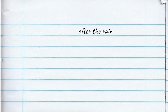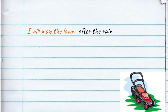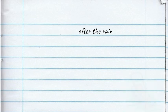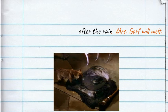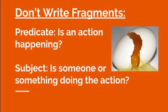'After the Rain.' Can you find something happening? Can you find a person or thing that isn't part of a description? This doesn't have a subject or a predicate. It's explaining when something will happen, but we don't know what will happen or what will do it. This fragment needs to be attached to a whole sentence with its own subject and predicate: 'I will mow the lawn after the rain.' 'My dad will go for a bike ride after the rain.' 'After the rain, Mrs. Gorf will melt.' Always make sure you know who's doing what in your sentence.